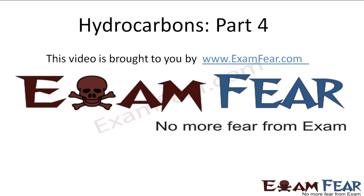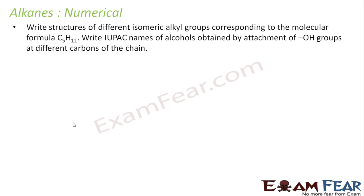Hello friends, this video on hydrocarbons part 4 is brought to you by exampeer.com. Now I will take some numericals. We have to write the structure of different isomeric alkyl groups corresponding to the formula C5H11, and we have to write the IUPAC name of the alcohol obtained by attaching an OH group to these different chains.